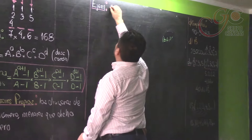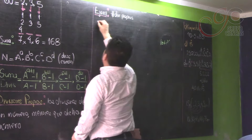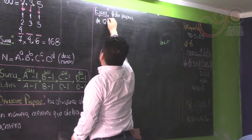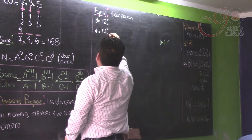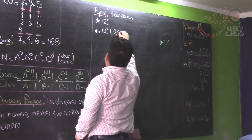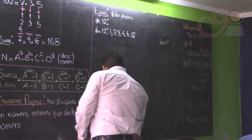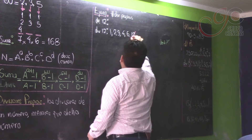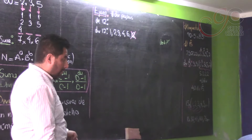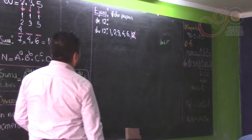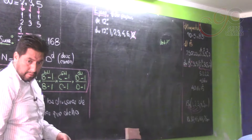Si te pregunto ¿quiénes son los divisores propios de 12?, cuento los divisores de 12: 1, 2, 3, 4, 6, 12. Pero al 12 no lo cuento. Son los divisores propios de 12 todos los divisores menos el 12 mismo.